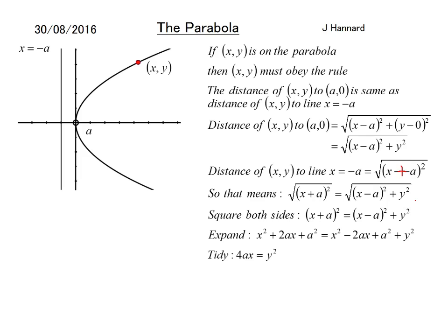And tidy up. So the x squareds will cancel because we see one x squared on both sides. The a squareds will cancel because we see an a squared on both sides. And we take the 2ax over the other side and it becomes 4ax. So that means our generic parabola is called y squared equals 4ax. So it all depends on what your a is and that will generate our function.